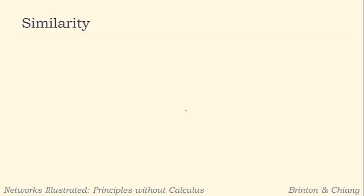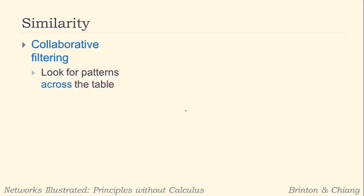It's a very similar technique to do that. The main idea here — the technical term for it — is collaborative filtering, where we really look for patterns across the table. Rather than just treating the rows and columns in isolation, we look for patterns across the table. We'll look at one of the simpler methods, one of the easier ways to do collaborative filtering. There are many different ways to accomplish it.